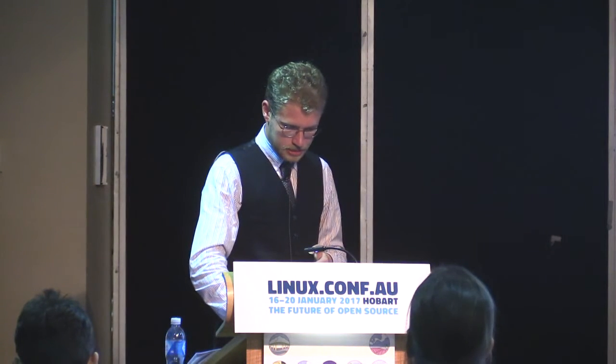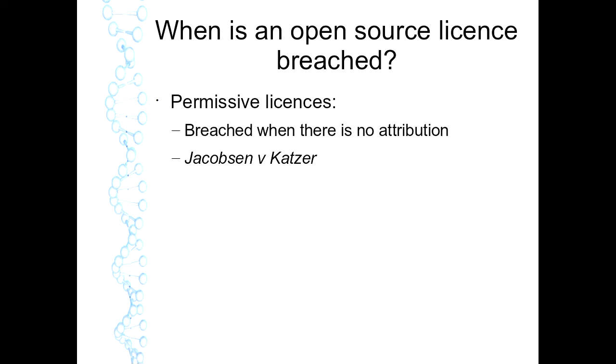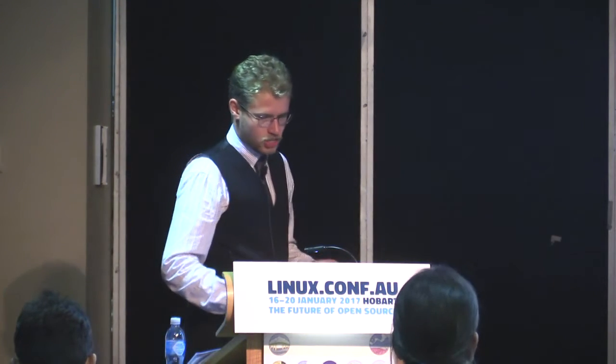The next stage addresses when is an open source license breached. Starting with permissive licenses, they can be breached when there's no attribution. If you include openly licensed code in a proprietary work without reference to the original developer, that can lead to a breach of the license. There has actually been litigation in this regard — perhaps one of the most famous open source cases, Jacobson v Katzer, which concerned openly licensed model railway software. The defendant took some of the plaintiff's openly licensed code under the Artistic License and put it in a proprietary package.